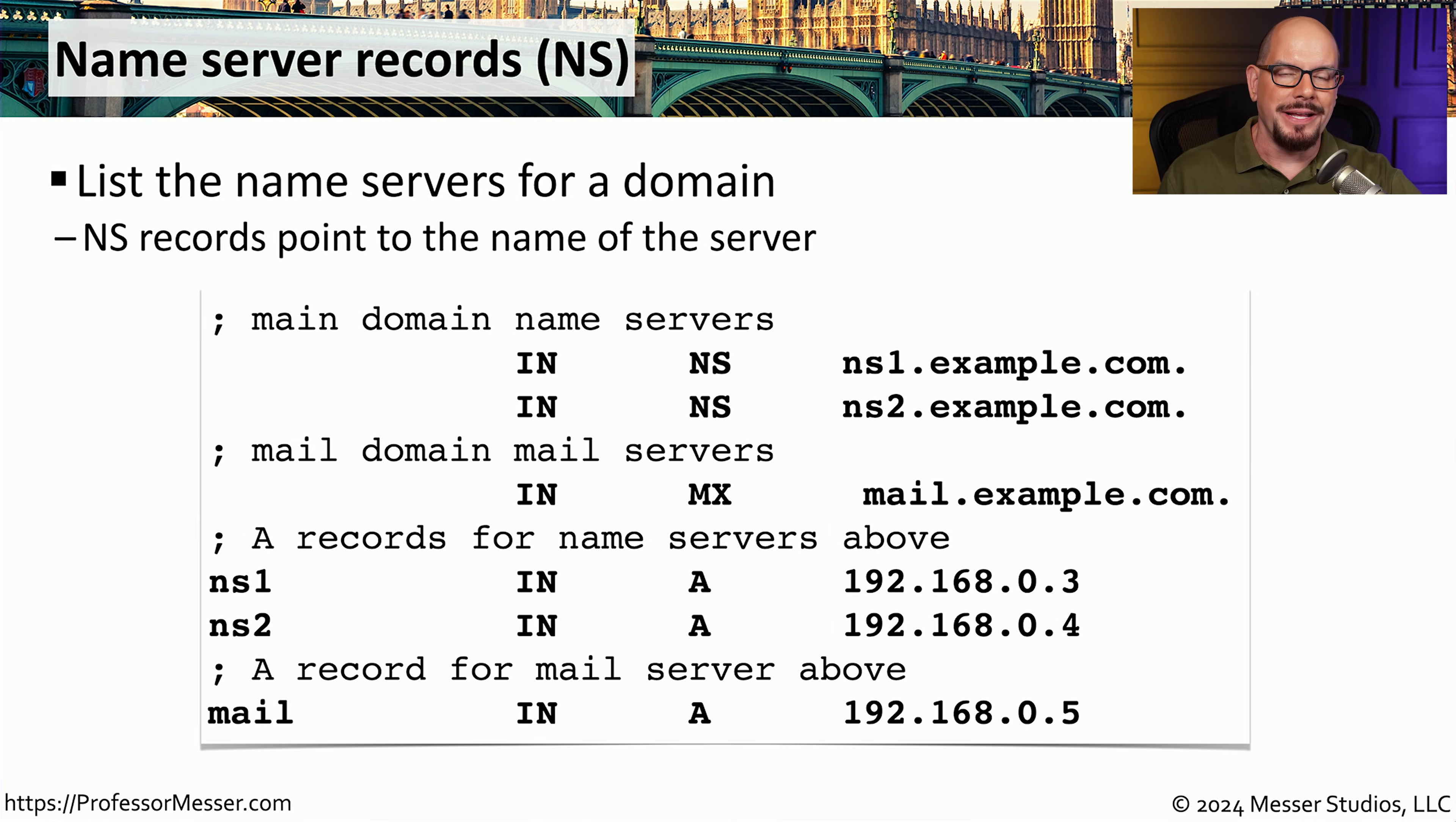Another important record is a record that specifies where the name servers are for your particular domain. These are obviously extremely important servers, especially if you need to perform name resolution. These are name server records, or NS records. And you can find these NS records listed as individual lines that specify where those name servers happen to be located. For example, in this domain, you can see there are two name servers listed. One is ns1.example.com, and the other is ns2.example.com.